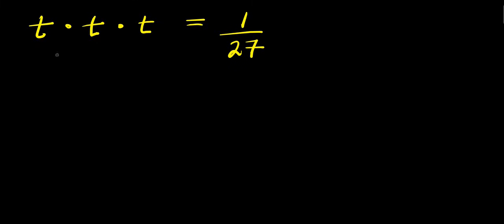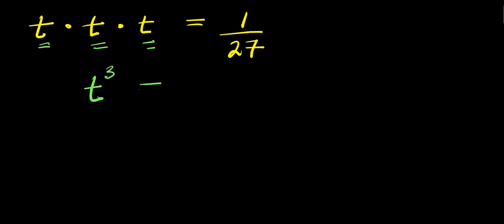Hello. How to solve: t times t times t equals 1 over 27, solving for all values of t. So let's start. We have t times t, that is t to the power 2, times t again — this is t to the power 3 equals 1.